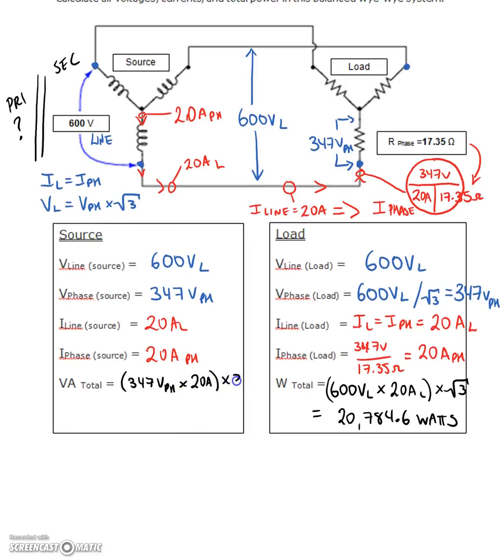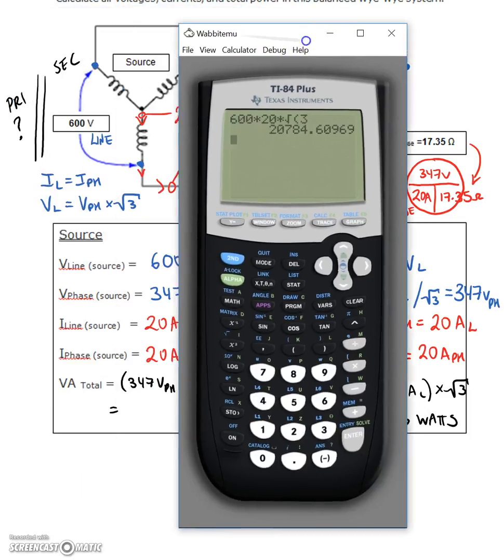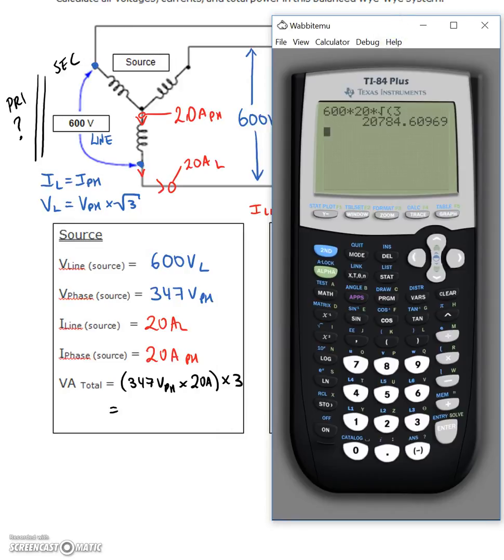347 volts on the phase times 20 amps on the phase. And we're multiplying that by three. So again, we've got 347 volts on the phase, we have 20 amps on the phase, and we're multiplying those guys by three. 20,820.